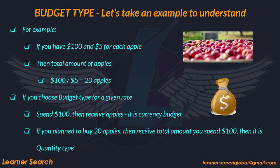Consider the following example. If you have 100 dollars and the price of each apple is 5 dollars, the total number of apples you will buy is 100 divided by 5, which is 20 apples. If you spend 100 dollars and then receive a number of apples, then the budget type will be currency budget.